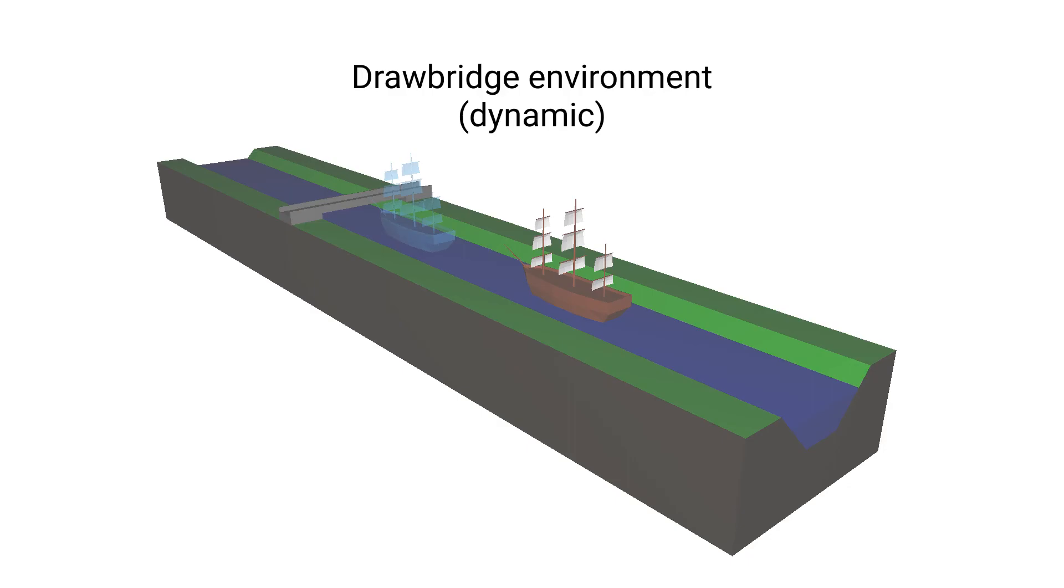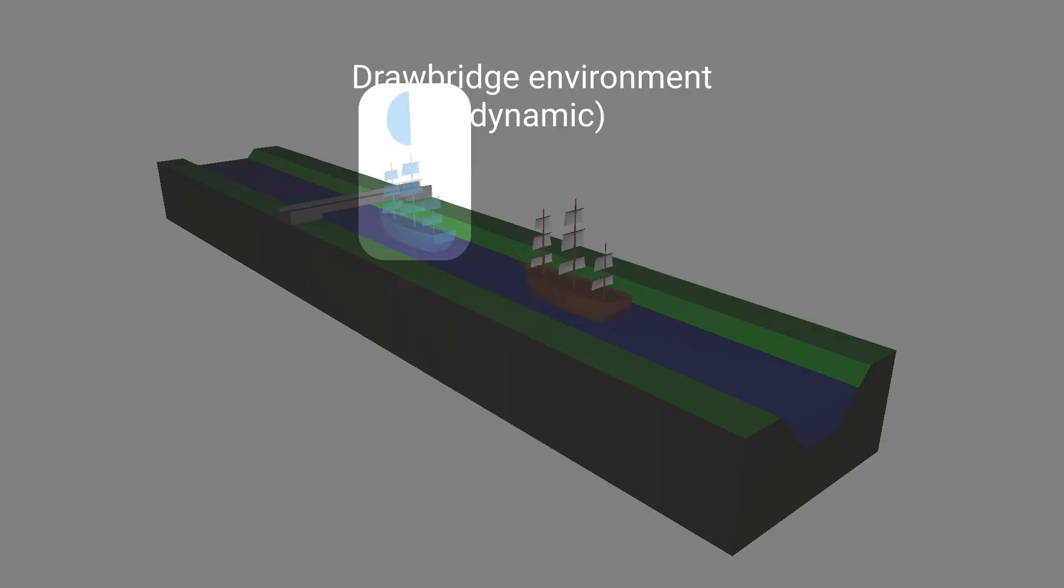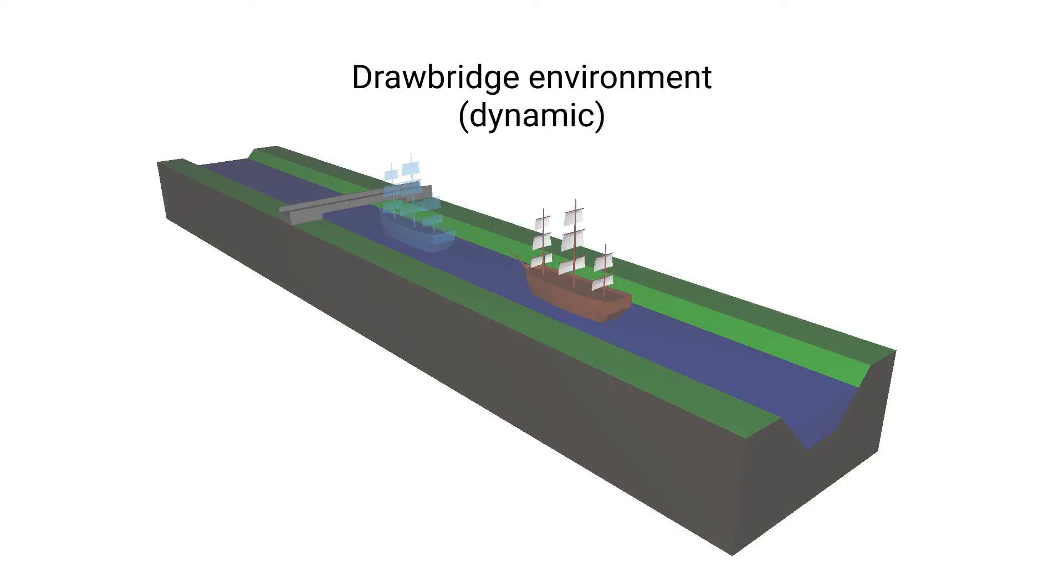In the drawbridge environment, a sailing ship pursues subgoals or timed subgoals and has to pass a drawbridge that opens at a fixed point during the episode to get to the end of a stretch of a river. Note that the challenge in this environment is to not only reach the end of the river, but to do so in the shortest possible amount of time.